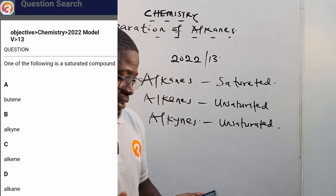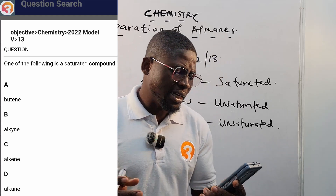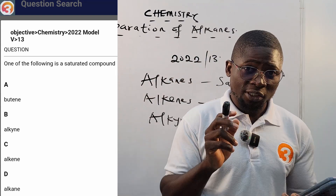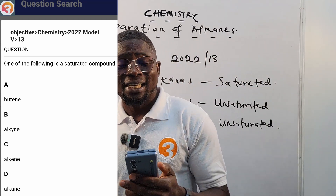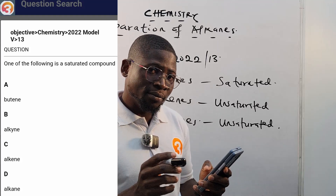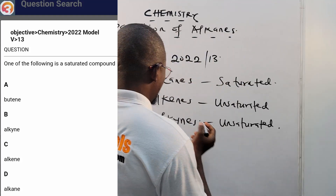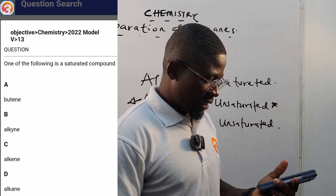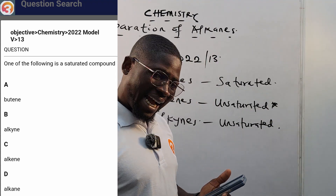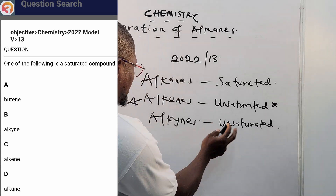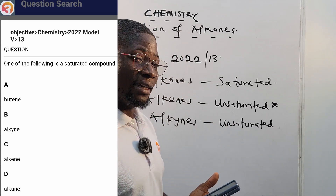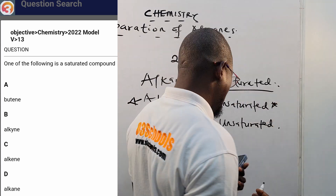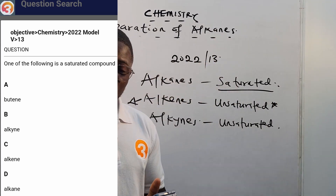So the question says: 'One of the following is a saturated compound.' Option A is butyne — butyne is an alkyne, and alkynes are unsaturated, so that cannot be our answer. Option B is also an alkyne — unsaturated, also not the answer. Option D is an alkane — alkanes are saturated — so the correct option is D. Do not joke with whatever we teach.